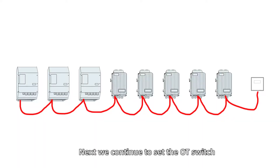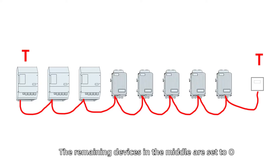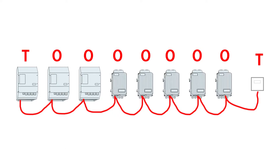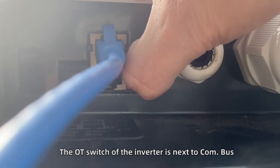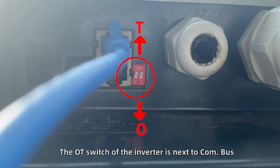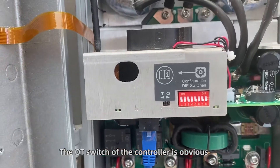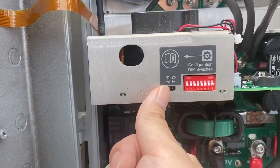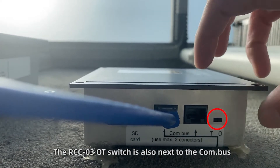Next we continue to set the OT switch. No matter how many devices you connect, set the first and last device to the T switch; the remaining devices in the middle are set to O. The OT switch of the inverter is next to the COM bus. The OT switch of the controller is obvious. The RCC03 OT switch is also next to the COM bus.